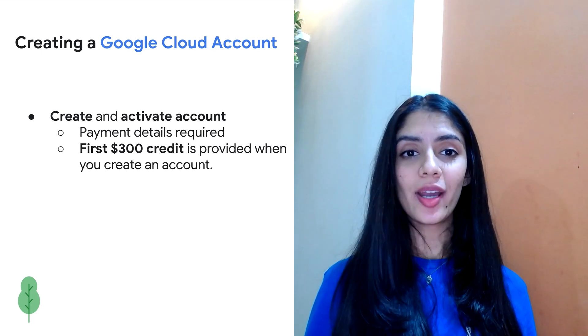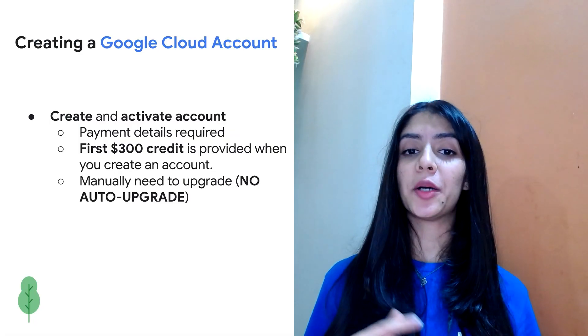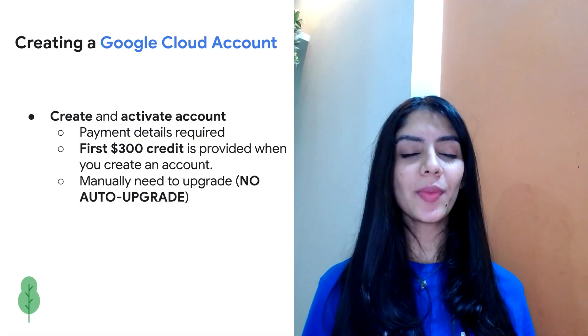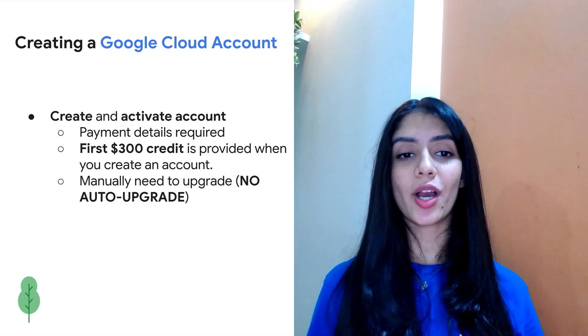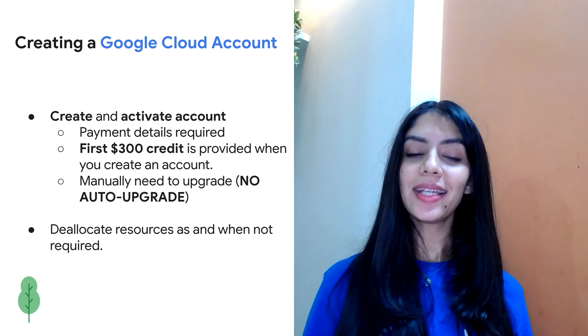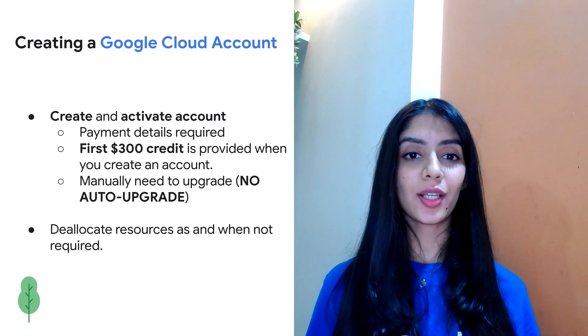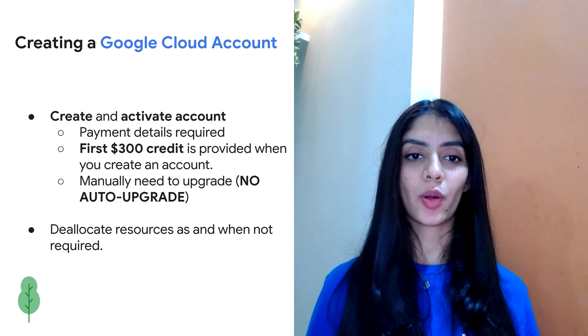By default, you are provided with $300 of credits, and this is more than sufficient in case you are just planning to experiment or practice for a certification. Once those credits are over, you will have to manually upgrade to a paid tier to continue working. So don't worry, as you are not auto-charged once your trial expires. But in any case, it's always good to know that you have to deallocate, delete, and stop the resources that you do not require.